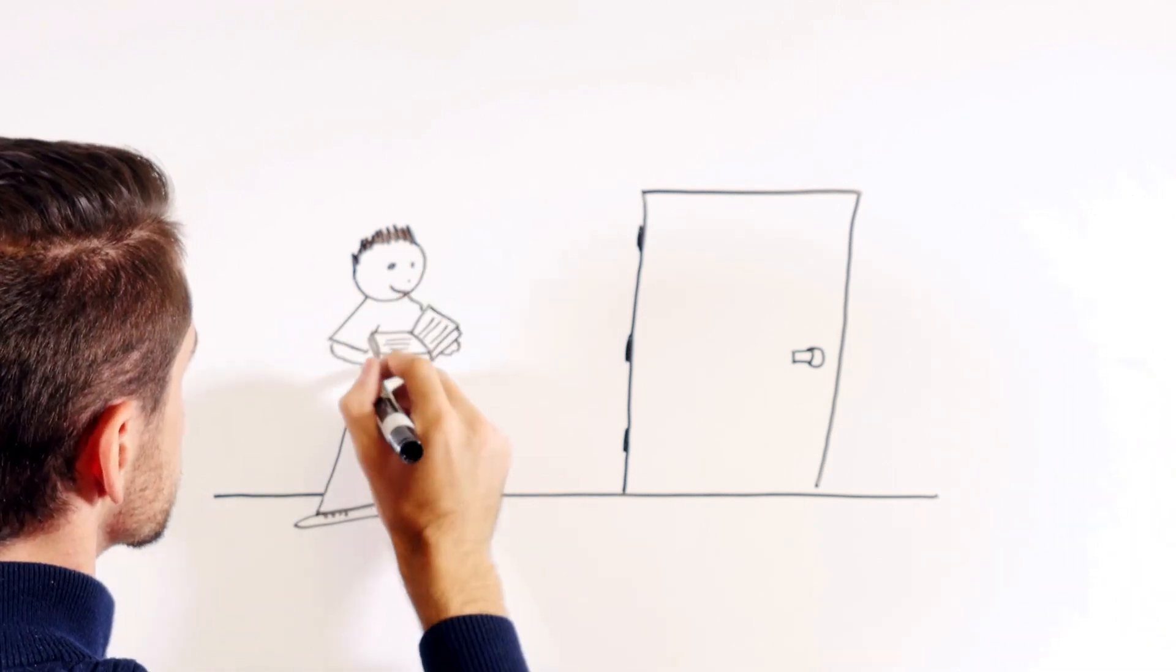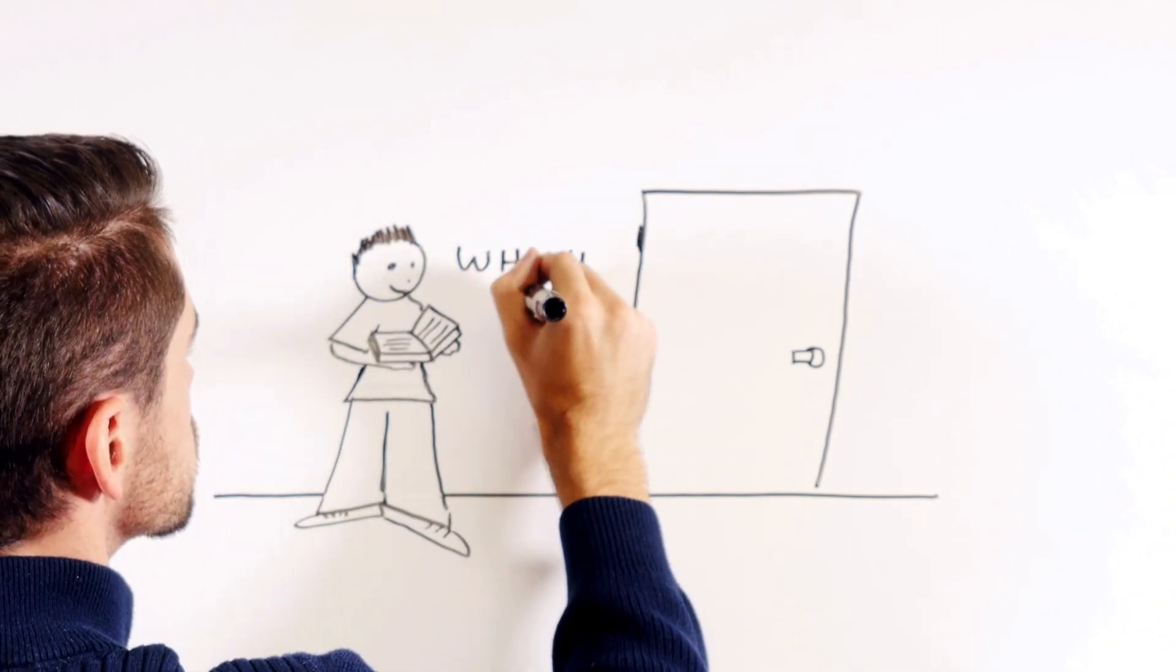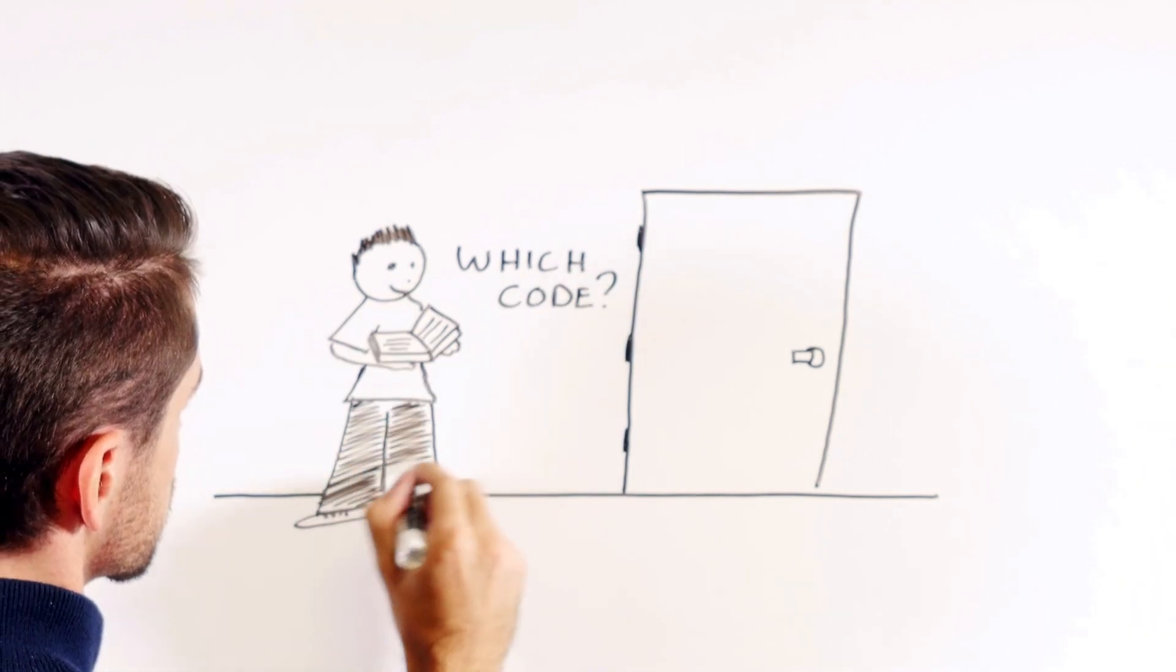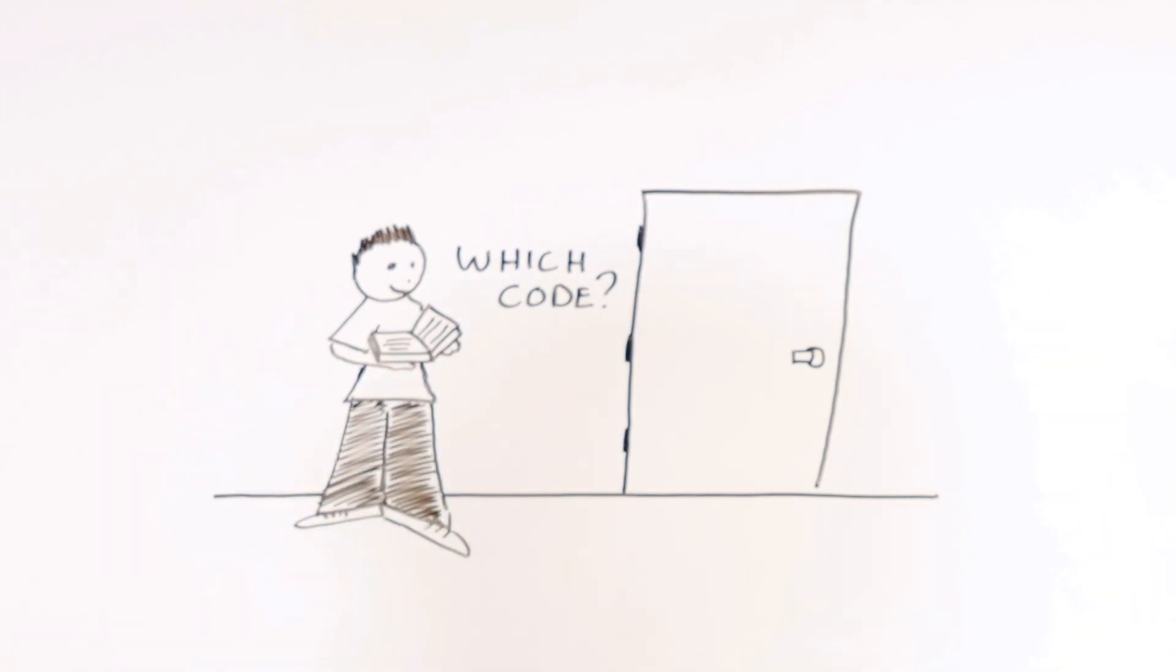Although most codes and standards are revised every three years, the newest edition may not be adopted in the project's jurisdiction right away. The building code that is in effect when the building permit is issued is typically the code used during design and construction.